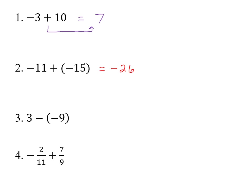Number three says three minus negative nine. If you have a minus and a negative, the two negatives cancel and become a positive. So two negatives next to each other cancel each other off, giving you three plus nine. Then you have two numbers that are the same sign — both positive — so we add them together to get twelve.